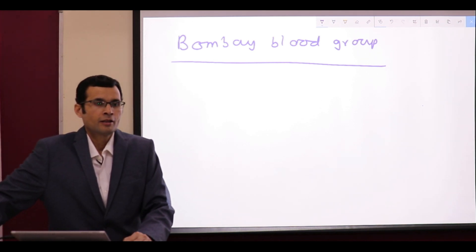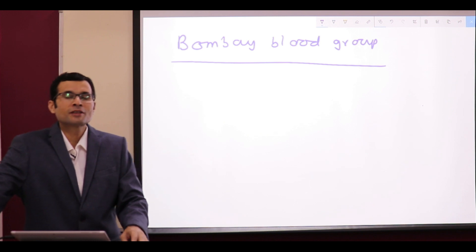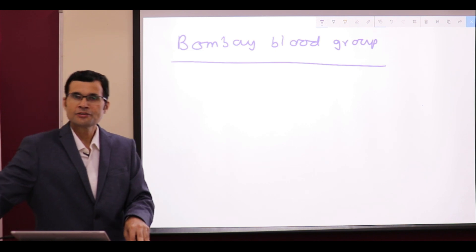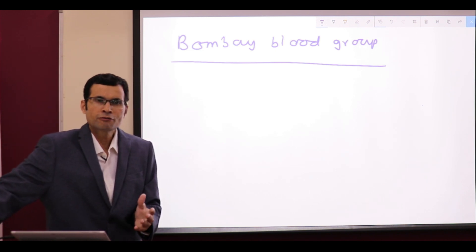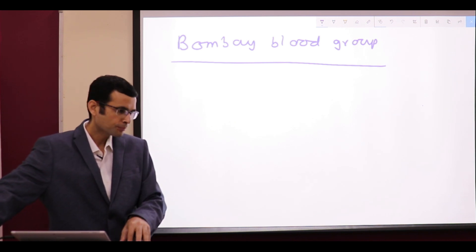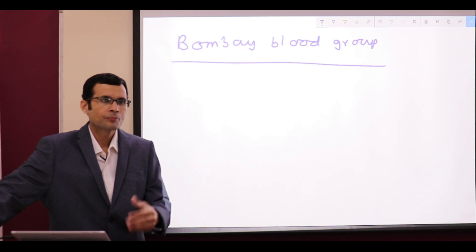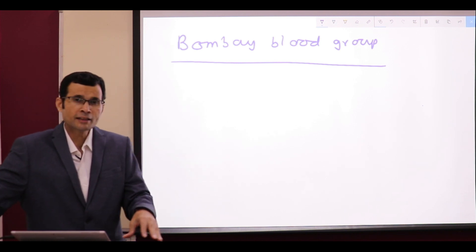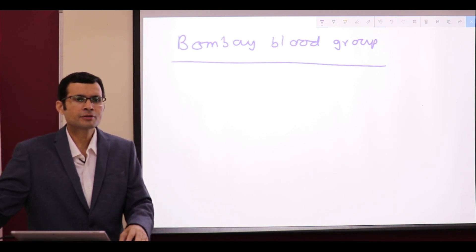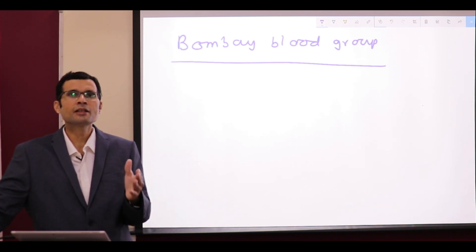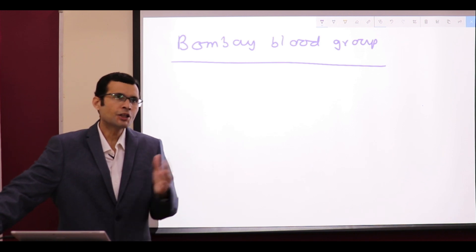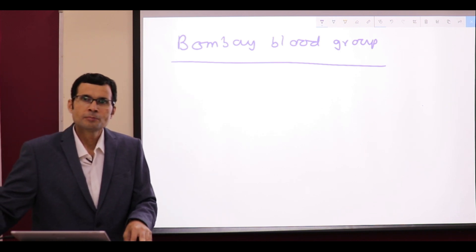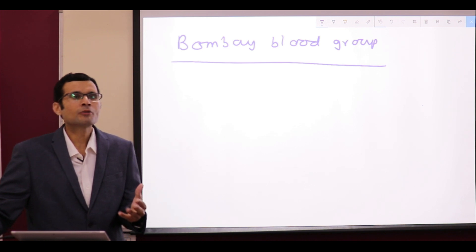Karl Landsteiner discovered the blood group systems — the first blood group system, ABO, in the year 1900. Ever since, almost 40 different blood group systems have been discovered. ABO and Rh are the clinically most significant, but apart from those there are various other systems like MNS, Kell, Duffy, Lutheran, Lewis, etc., each of them having limited significance.